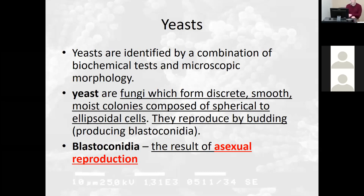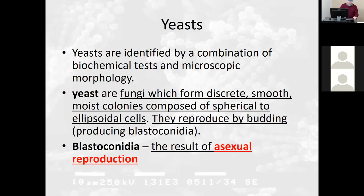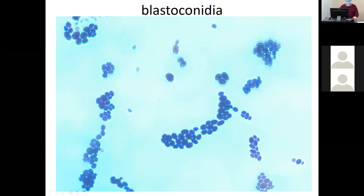Yeast reproduce by budding and you can see that budding even in a urinalysis. They're the ones really smelling good downstairs — like we're brewing a microbrewery — and they all grew really well. Yeast form blastoconidia. Yeast also have something known as pseudohyphae: as the daughter cell enlarges, a constriction develops between the parent and daughter, and it looks like two cells separated by a septum, forming a chain of blastoconidia that elongates and may take the appearance of a hyphae.